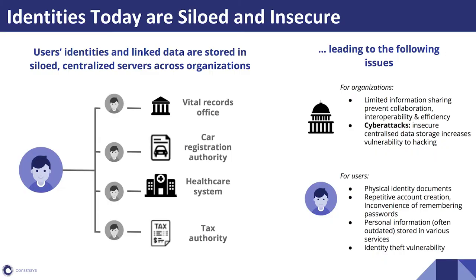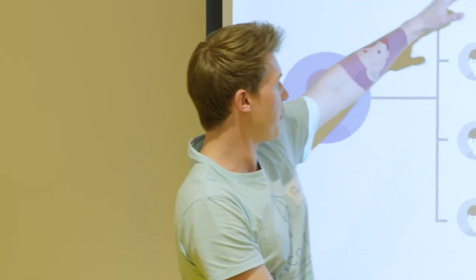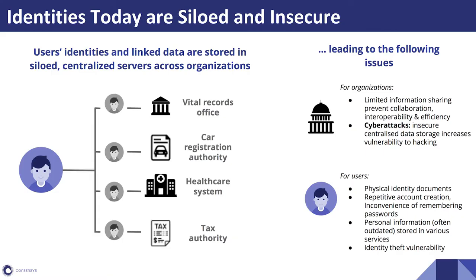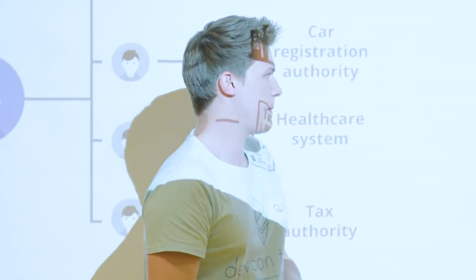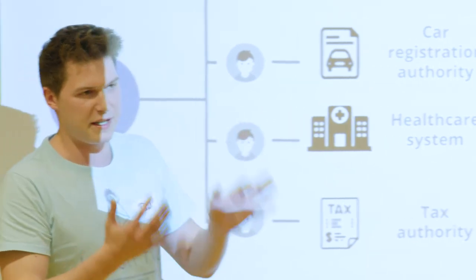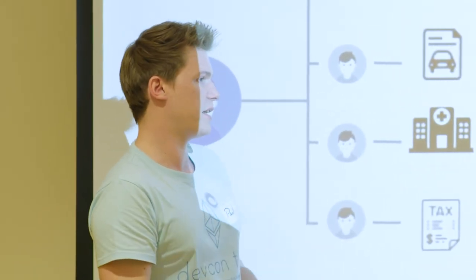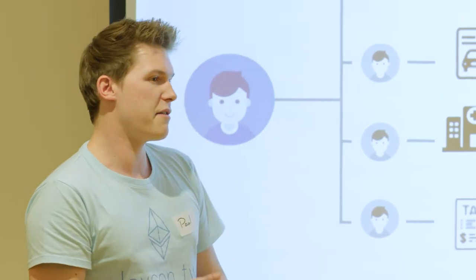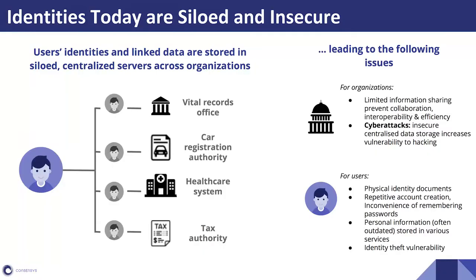Identities today are completely siloed and insecure. Your data is stored with all these different authorities — in the government case with all these different agencies. Each one is susceptible to being hacked and your data exposed. Each one has your physical documents that you've uploaded at some point, requiring you to create accounts with each. And when they have your data, it's normally outdated very quickly. The current system is completely broken.